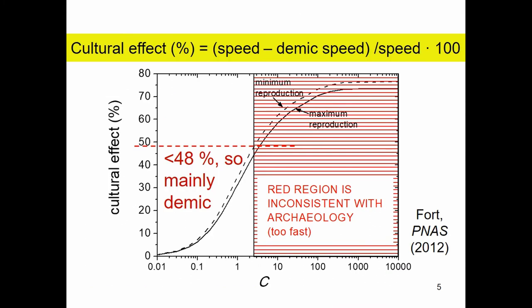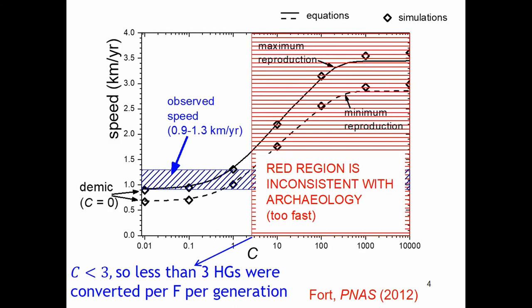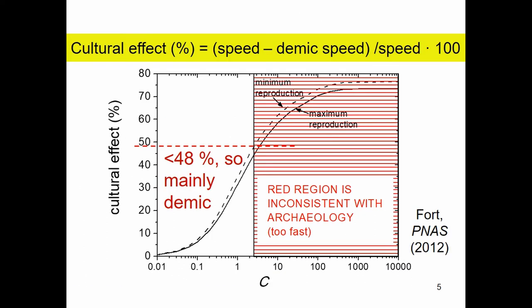The same results obtained from the equations can also be obtained from numerical simulations. This next slide defines the cultural effect as the speed minus the demographic speed — that is, the speed when c equals zero. If c is zero, no hunter-gatherers are converted into farmers, so there is no cultural transmission. The cultural effect relative to the total speed is expressed as a percentage.